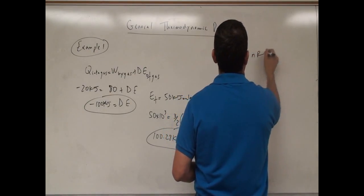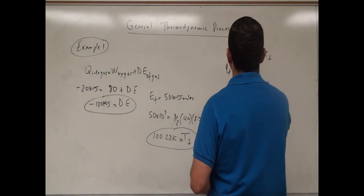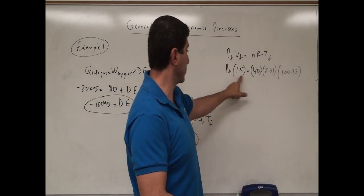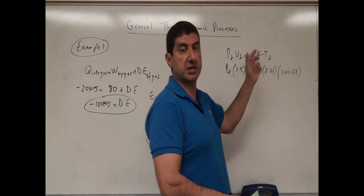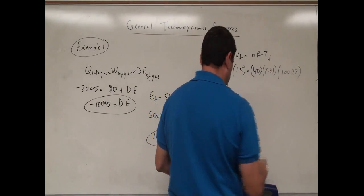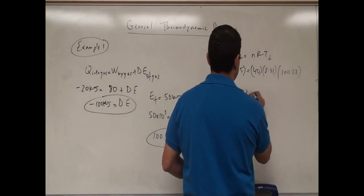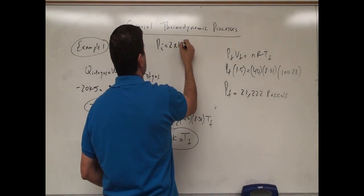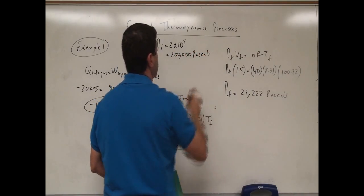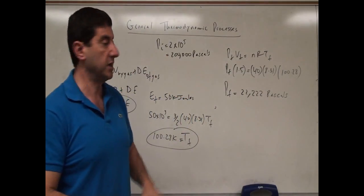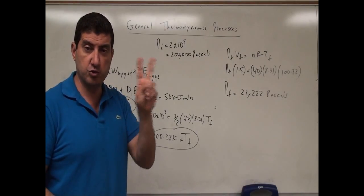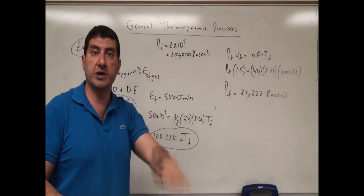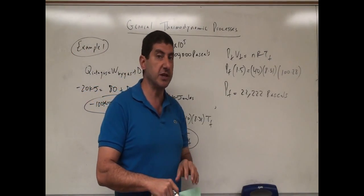We can also solve for the final pressure using PV = nRT. P_final × 1.5 = n × R × T_final. Because the volume is increasing and the final temperature is way down, the pressure drops dramatically. P_final comes out to approximately 22,222 pascals. The initial pressure was 200,000 pascals (two atmospheres), so it drops all the way down to about one-fifth of atmospheric pressure.